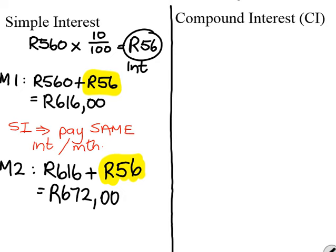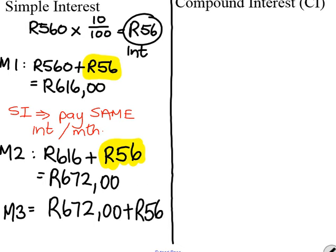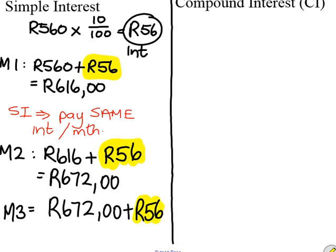But remember, the question said she doesn't pay for three months. So what is going to happen in month three? You are going to take your 672 Rand and add the 56 Rand interest that we calculated right at the beginning. At the end of month three, if she goes to pay her account, she has got to pay 728 Rand.